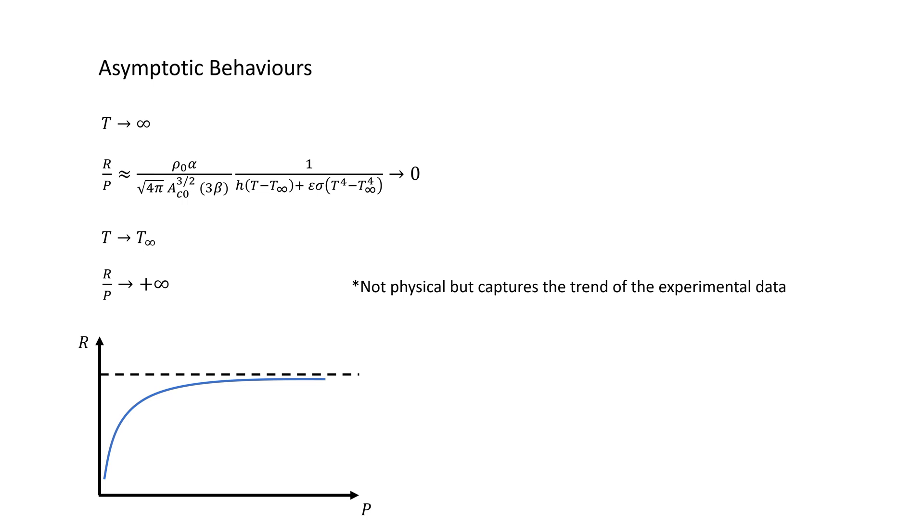As the temperature of the wire goes to infinity, R over P will approach zero. As the temperature approaches the room temperature, we can see that R over P becomes very large. So we expect R versus P graph to look something like this. This is exactly what we see in our data.